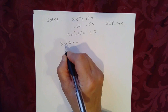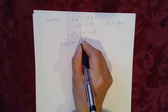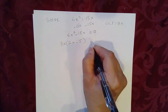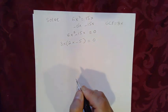Minus, here we have, this one must be 5. 3x times 5 gives me 15x. And that's equal to 0.